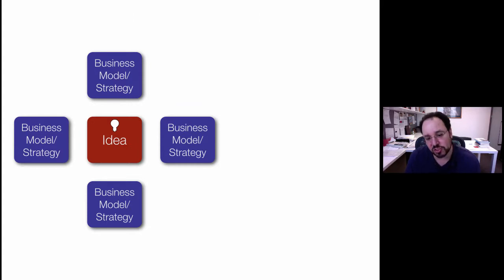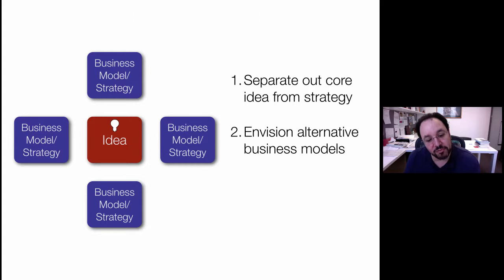Okay, so that's this three-step process. You want to separate out the core idea from the strategy. You want to envisage alternative business models. And then you want to conduct some sort of strategic analysis on each to choose which one you're going to do first.